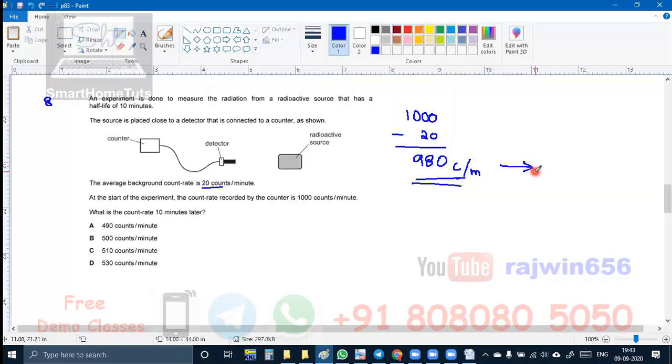After 10 minutes, that is after half life, this count rate 980 should become half. So this is going to become 490 counts per minute. This is without counting the background radiation. The background radiation has to be there that you never forget to add that. This count rate is going to become 510 counts per minute. Your answer for this question is going to be C.